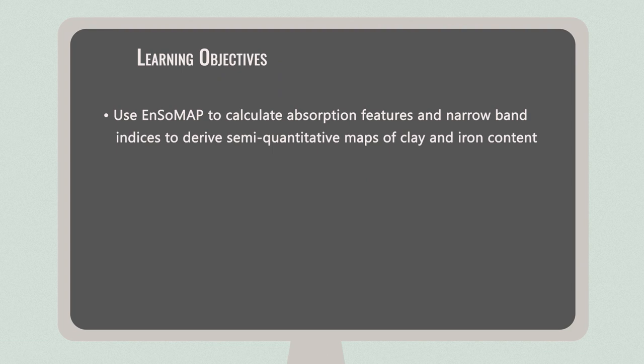Ensomap 2.0 was actually designed by your instructors, the colleagues of the Soil Working Group at GFZ Potsdam. With Ensomap, you can very easily calculate a number of absorption features and narrow band indices to derive semi-quantitative maps of several soil parameters. I'll show you how to do that for clay and iron content in a beautiful Spanish national park.